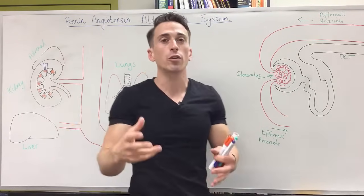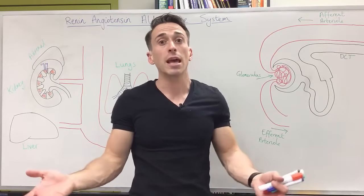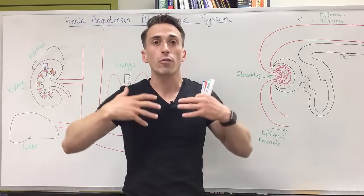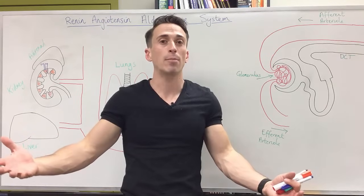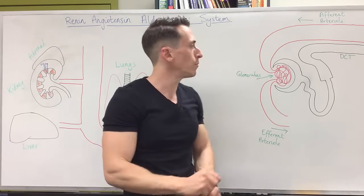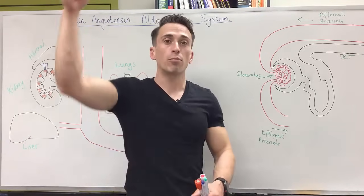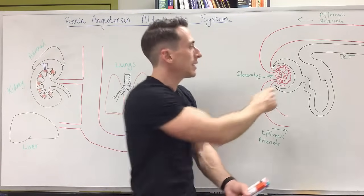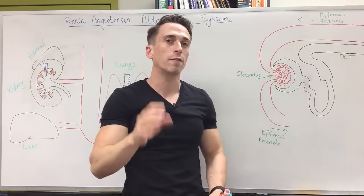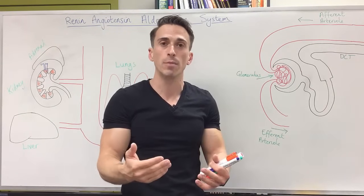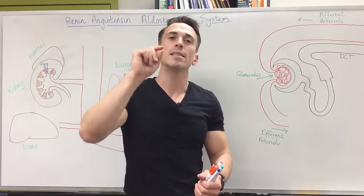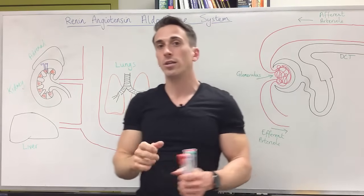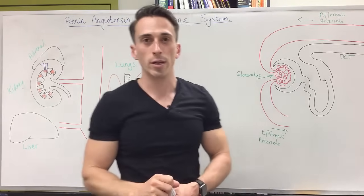If your blood volume drops — for example, due to a bleed-out, a hemorrhage, or due to some sort of peripheral vasodilation which may happen in anaphylactic shock — your blood pressure and blood volume drop. That means the kidneys at the glomerulus will not be able to filter that 120 millilitres per minute, and this is the stimulus to release the first component of the renin-angiotensin-aldosterone system: renin.